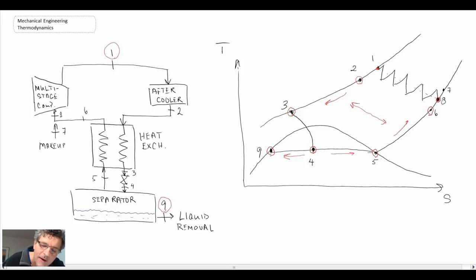And state five is where we go back into the heat exchanger. Notice we have makeup air coming because we are pulling mass out of the system, and so we continually have to make it up. But then we go then again into the multi-stage compression process.